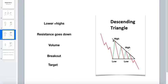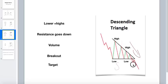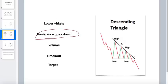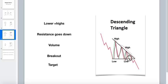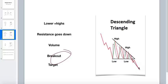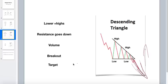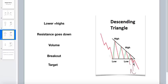Now the descending triangle — the opposite of ascending. Your lows remain flat while your highs keep coming down, making lower highs. The resistance is going down, down, down, so you're getting pressure from the top side. Somewhere we are expecting a breakout downside. Volume will again reduce as the pattern shrinks, and after the breakout the volume will increase — lots of people selling. So the breakout happens and the price goes down. Target calculation is the same — use the widest range.